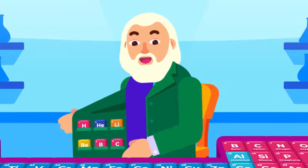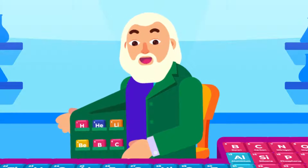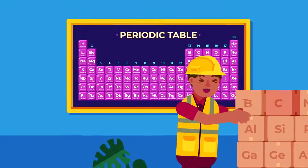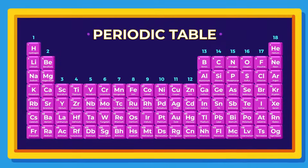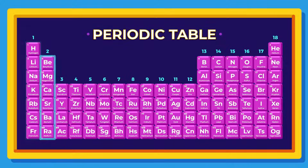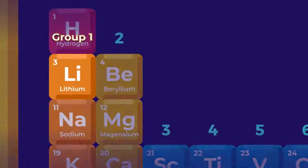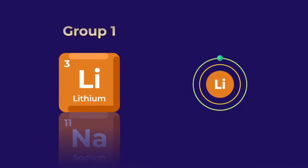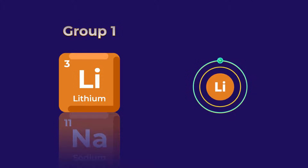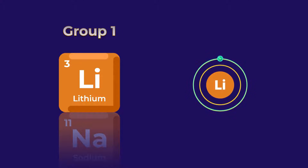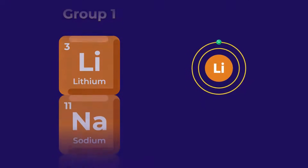We've spilled some information about periods of the periodic table. Now let's move on to groups. Groups are the vertical columns in the periodic table. Much like in periods, elements in the same group will have similar properties and are given numbers that indicate the number of electrons in the outermost shell, or valence electron, of that element's atoms.